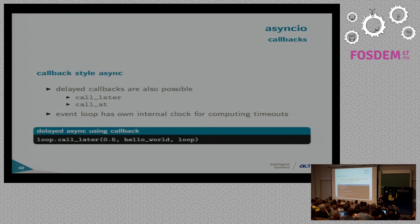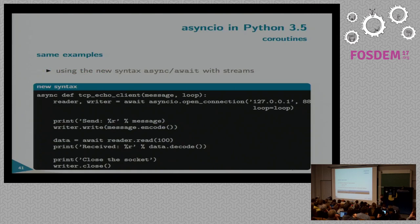You can also schedule regular functions: call_soon — execute a function pretty soon on the event loop. Call_later to delay function calls, or call_at to call at a certain time point. But that's all stuff unrelated to coroutines, so we skip it fairly easily.